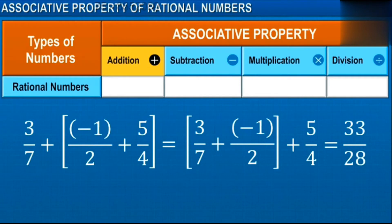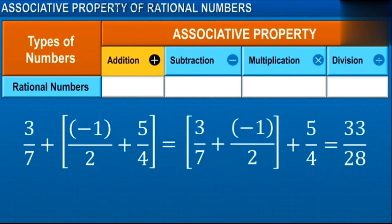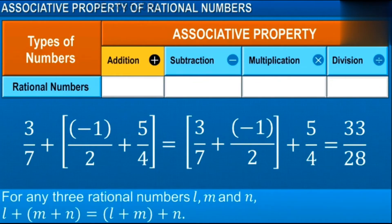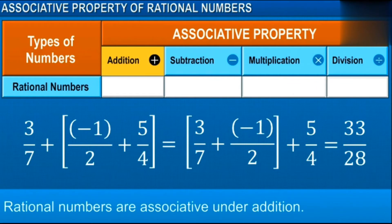We have seen that changing the combination of numbers did not change the result. Therefore, for any three rational numbers L, M, and N, changing the combination of adding them does not affect the result. Hence, rational numbers are associative under addition.